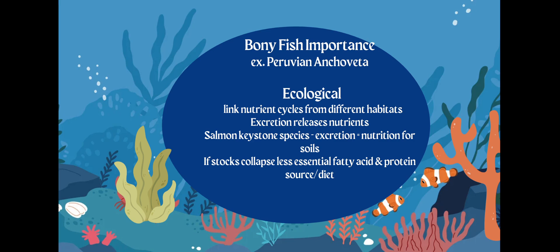When we think about this cold water, it's bringing up nutrients. It's also allowing the Peruvian anchoveta to cycle in more nutrients as they take in energy from phytoplankton or other organisms like algae. When they go to the bathroom, they release nutrients into the environment in the form of nitrates. These small bony fish allow for much larger fish to eat them. A keystone species example would be salmon — they use nutrients given off and cycle nutrients back into the environment, working its way up through a food web and food chain.